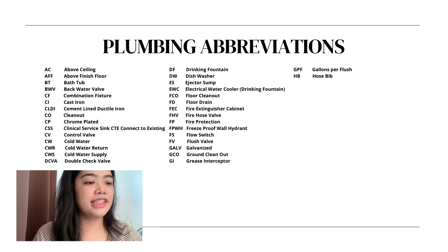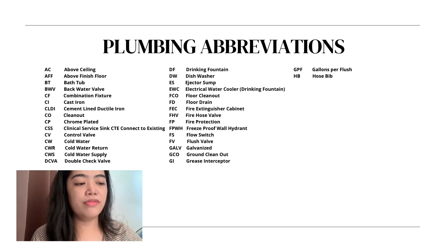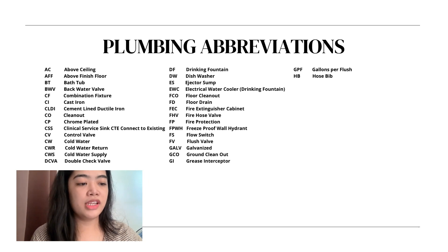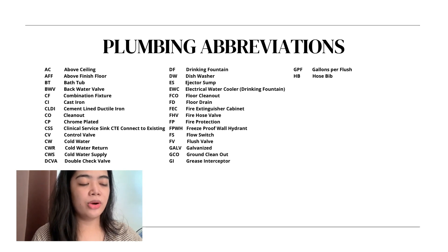AC — above ceiling. AFF — above finish floor. BT — bathtub. BWV — backwater valve. CF — combination fixture. CI — cast iron.